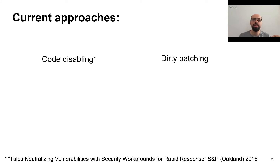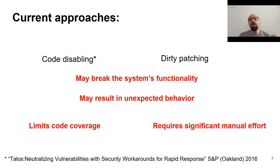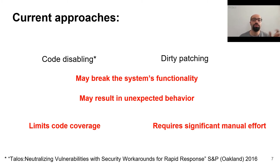Code disabling has been deployed by Talos, a paper published in Oakland 2016. However, these approaches suffer from serious drawbacks. Since they modify the kernel, the system's functionality can be lost or they can result in unexpected behavior. In addition, code disabling limits the code coverage of fuzzing, and dirty patching needs significant manual effort.